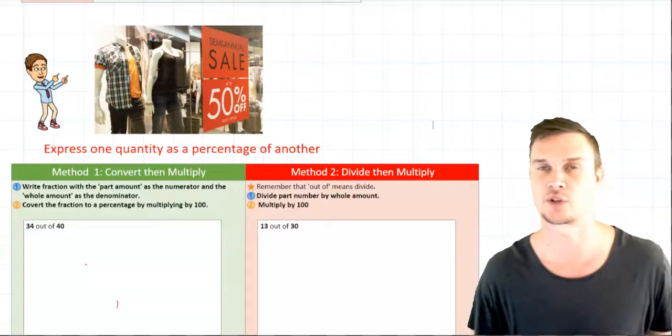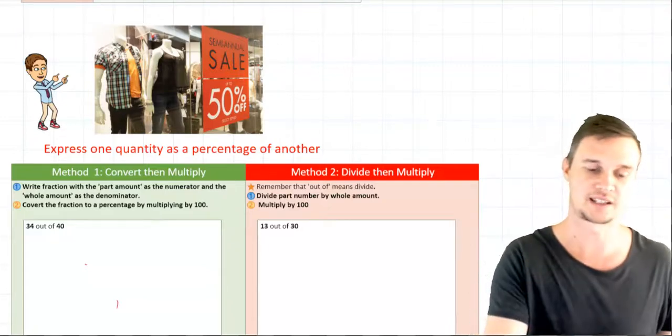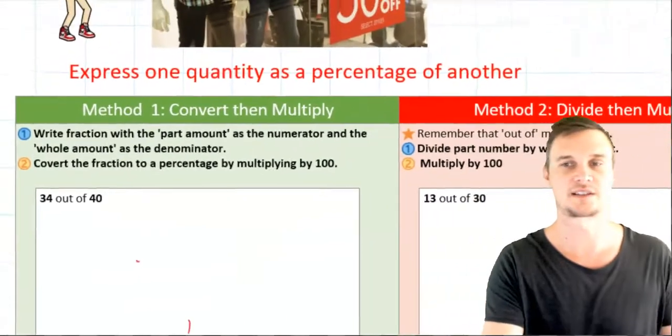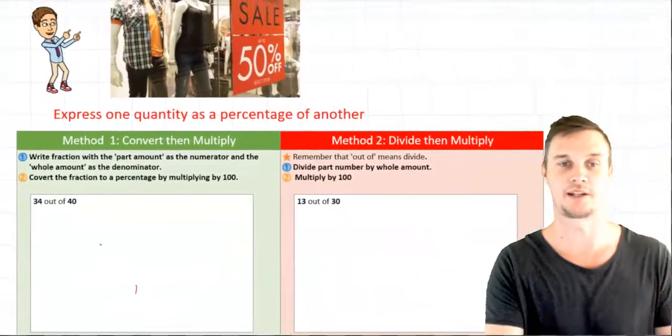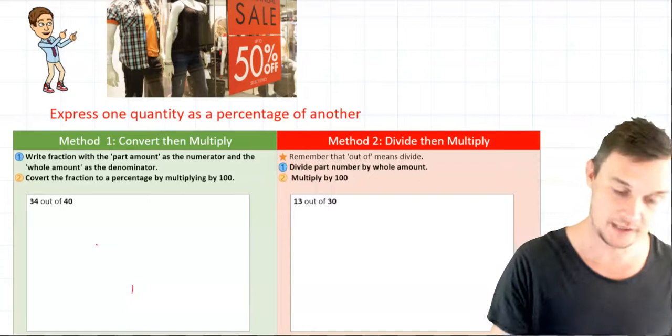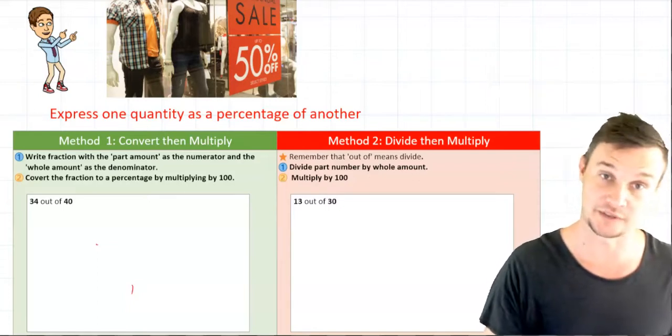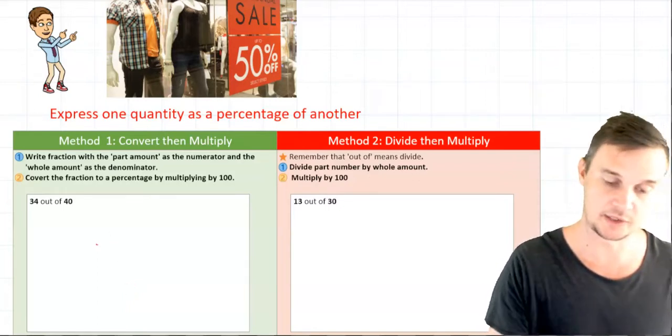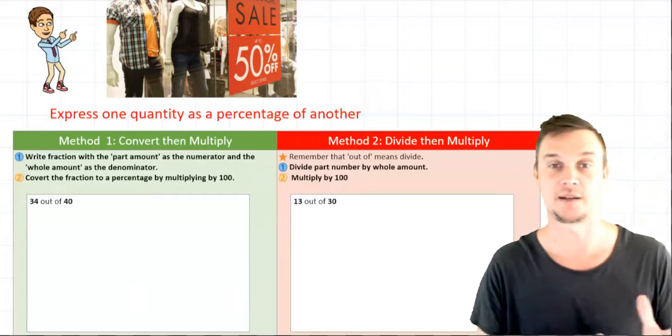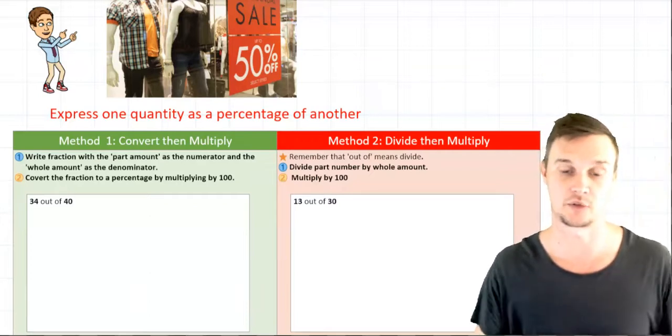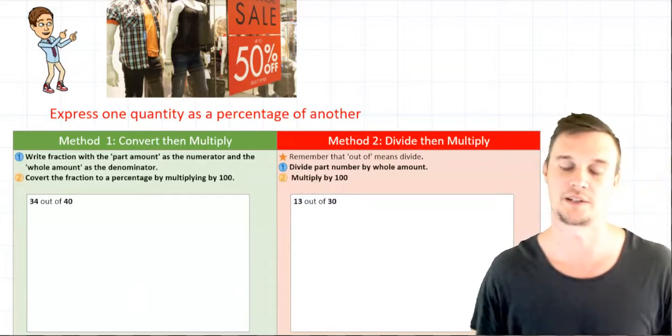So we've got two examples there and you'll see I've also got two methods. We're going to focus on similar scenarios like this. So let's just say you get an exam, you get it back and you get 34 out of 40 and you want to be able to convert that quantity into a percentage. And we're going to do two slightly different methods here. They'll both get the same result but you'll need to decide which one will be more easier for you.